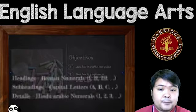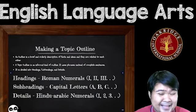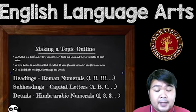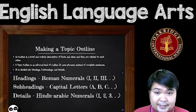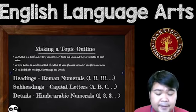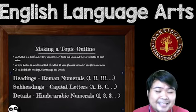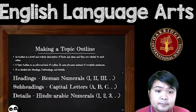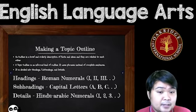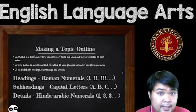Basically, what a topic outline is — it's a pre-write. It is a very important pre-write for when you are making something much bigger. For example, if you're going to create a research paper, you would have to make a topic outline.